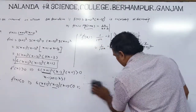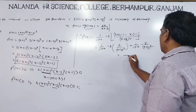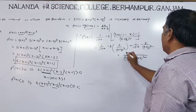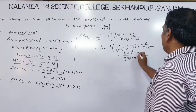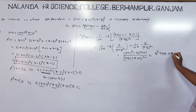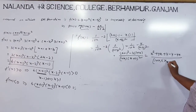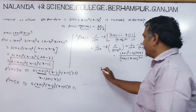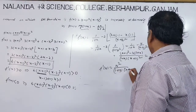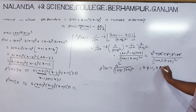After simplification, the numerator becomes (x+2)² minus (1+x)·4, which expands to x² + 4x + 4 minus 4 minus 4x, giving x². So f'(x) equals x² divided by [(1+x)(x+2)²], where x is not equal to -1 and x is not equal to -2, because at those values the function is not differentiable.